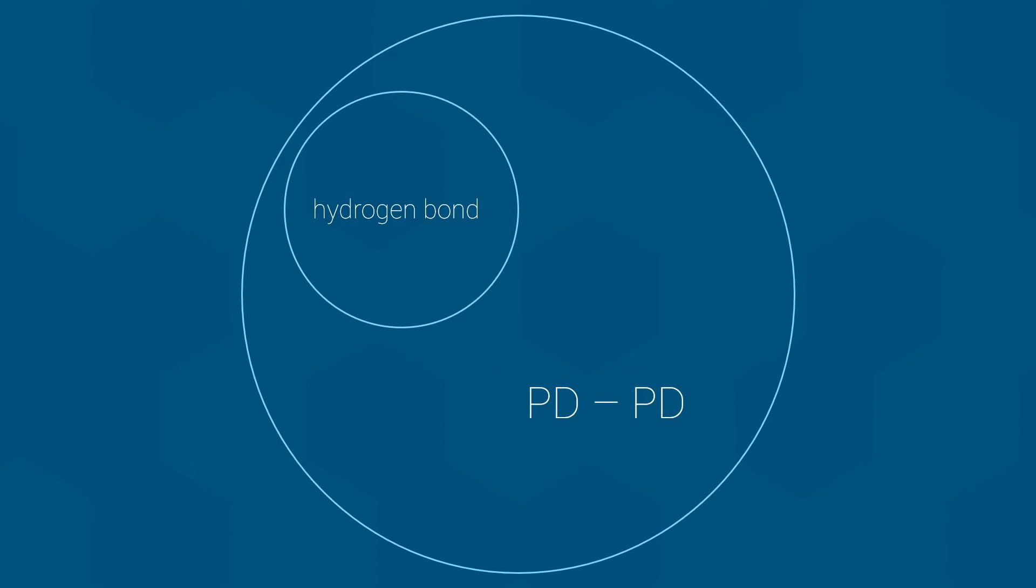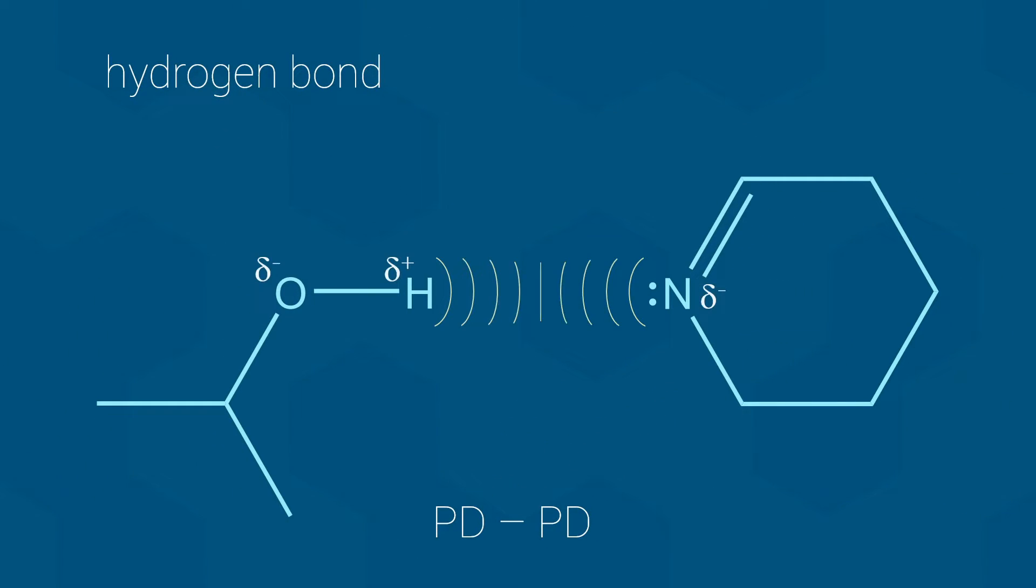Hydrogen bonds are a subset of permanent dipole interactions, and they have all the hallmarks of a typical permanent dipole to permanent dipole interaction. Both molecules involved have some kind of permanent dipole, and the two molecules are attracted by the interaction of a partial positive on one molecule and a partial negative on the other.